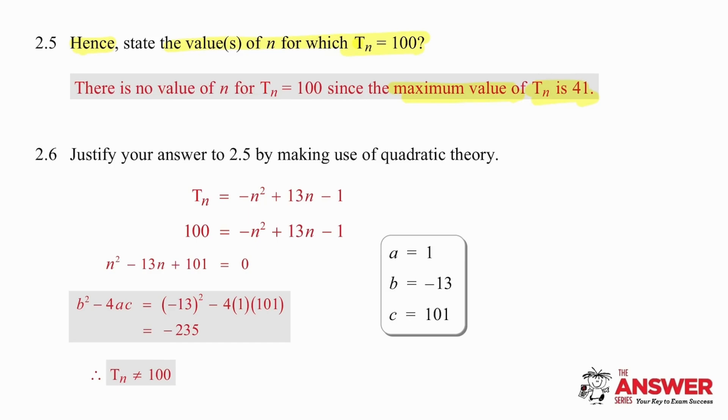Well, they can ask us, but we can't answer, because there is no such value. So the correct solution here is, there is no value of n for which T_n will be 100. And the justification is simply explaining that the maximum is 41.